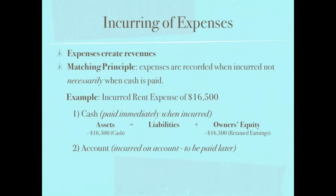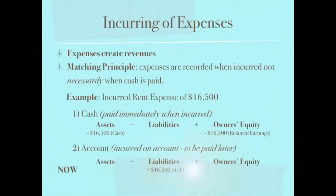Now let's look at incurring that expense on account. Are assets being affected right now? No, assets are not being affected. However, we owe this money in the future, so liabilities are increasing — we owe that $16,500. Owner's equity is still going down because expenses decrease net income, which affects retained earnings, which is part of owner's equity. Even though nothing happened on the left-hand side, we still balance: the right side went up by $16,500 and down by $16,500, so there's no net change.